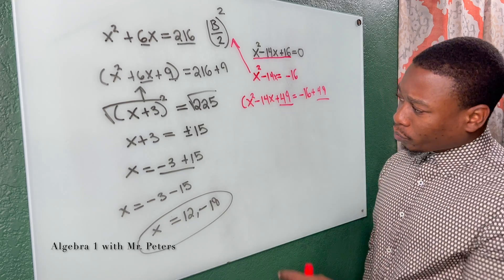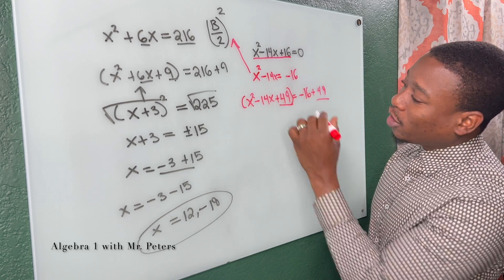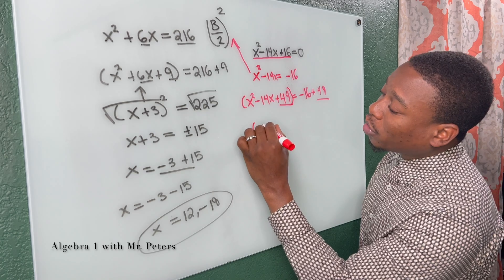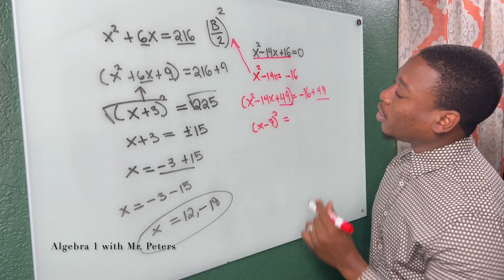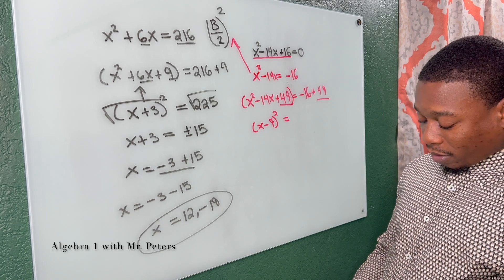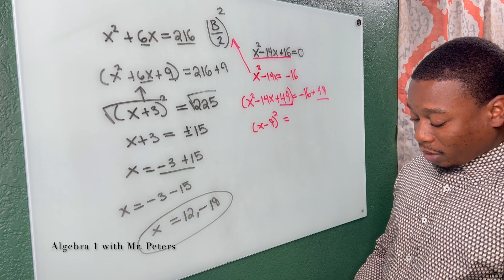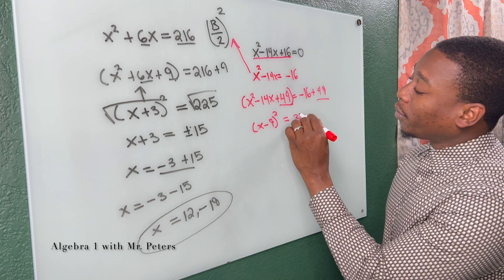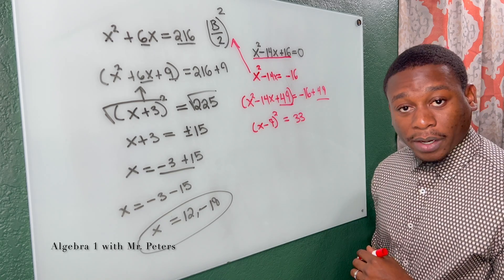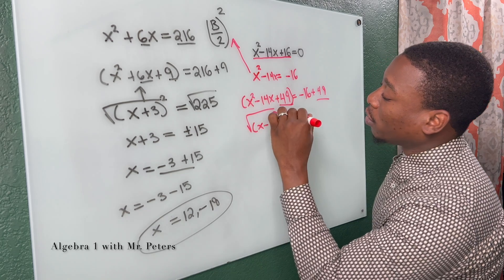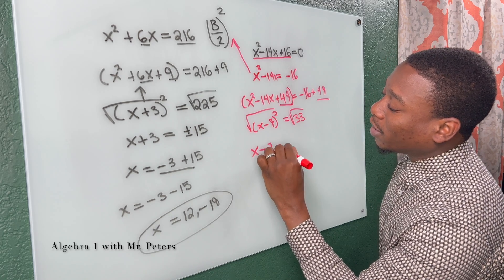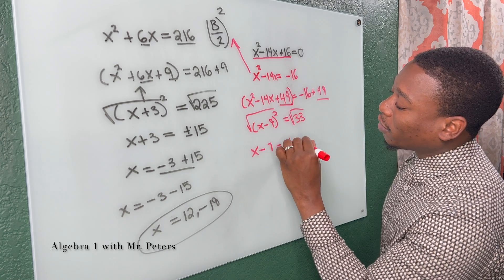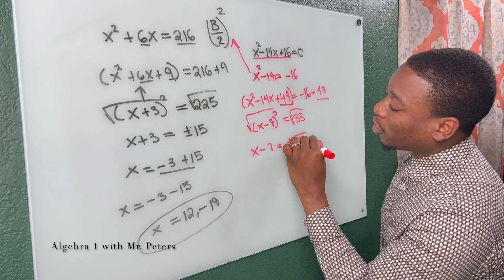Now at this step, we're going to rewrite this into its binomial. So this turns into x minus 7 squared. And that is equal to, let's see, 49 minus 16, that is equal to 33. So now we go ahead, square both sides. This just turns into x minus 7 is equal to positive or negative square root of 33.